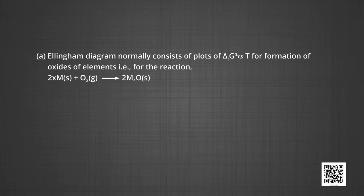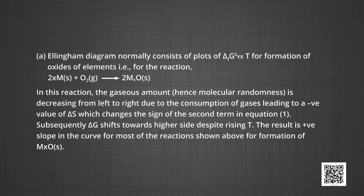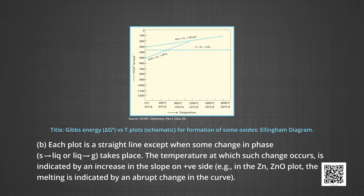Ellingham diagrams normally consist of plots of ΔG° versus T for formation of oxides of elements. For the reaction where metal atoms react with oxygen to form metal oxide, the gaseous amount and hence molecular randomness is decreasing from left to right due to the consumption of gases, leading to a negative value of ΔS. Subsequently, ΔG shifts towards the higher side despite rising temperature, resulting in a positive slope in the curve for most formation-of-metal-oxide reactions shown.